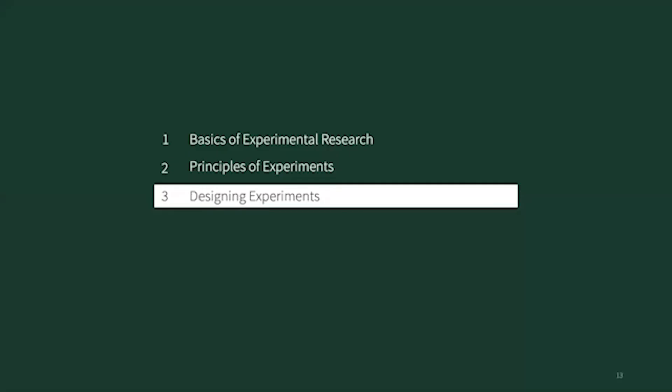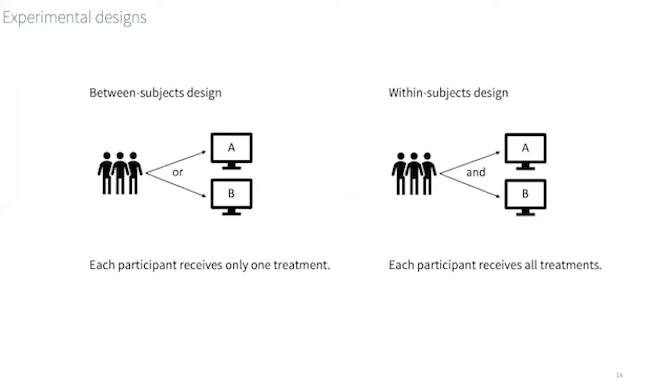Now, let's take a look at the design of experiments. In general, we can distinguish two experimental designs, between-subjects design and within-subjects design. The differentiation is quite simple. In between-subjects design, participants are distributed across experimental groups, so each participant receives only one treatment. In within-subjects design, however, all participants receive all treatments.